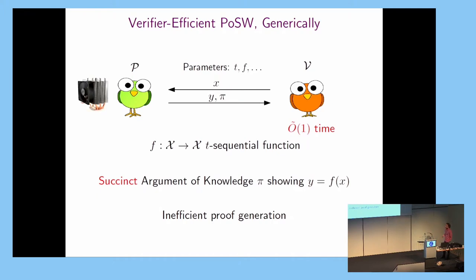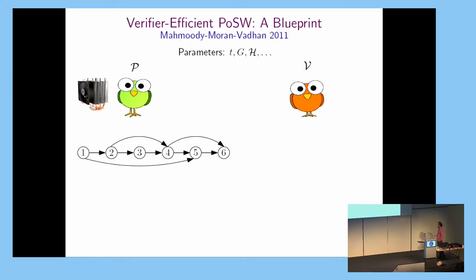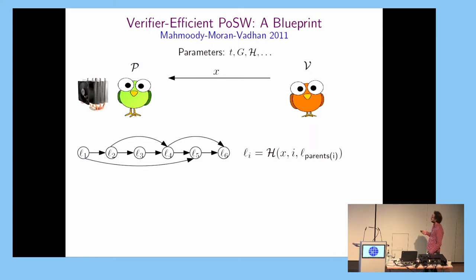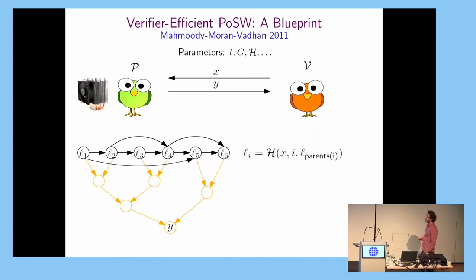We will not follow this approach. Instead we follow the approach of Mahmoudi, Moran, and Vadan. In this approach the protocol is parameterized by a graph. The prover uses a random oracle and the statement to label the graph in the most natural way: the label of a node is a function of the labels of its parents. You do the labeling of the graph, make a Merkle tree commitment to it, and send the commitment to the verifier.